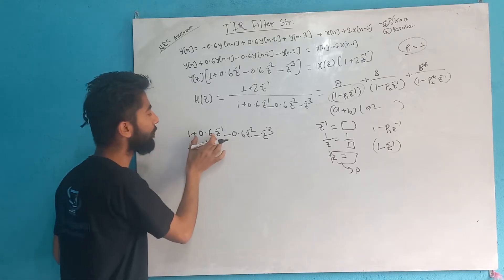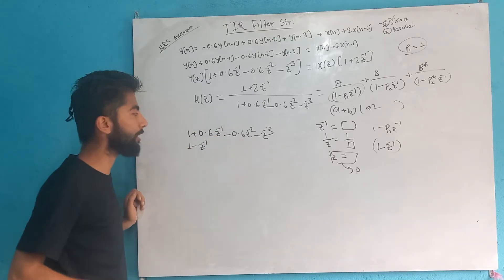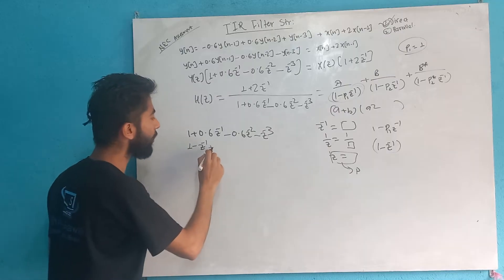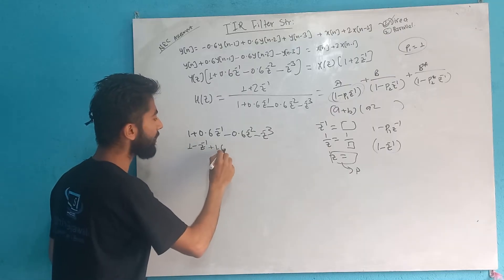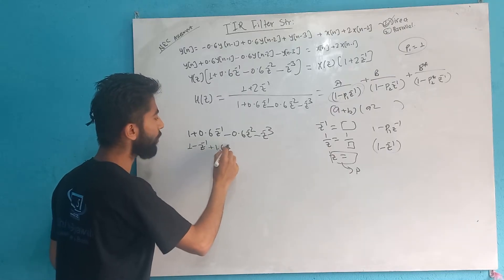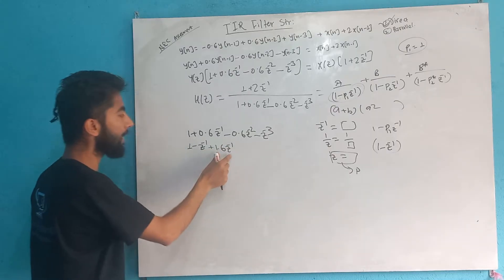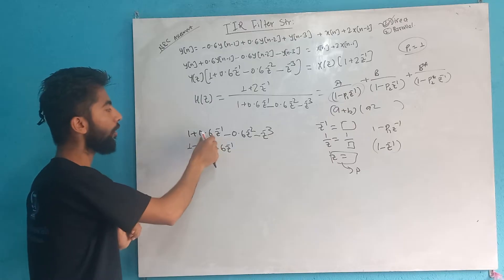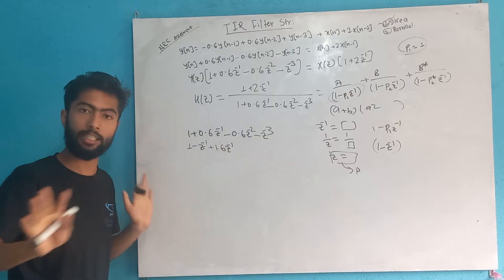Now if I say minus z-inverse, then it is plus 0.6 z-inverse. So plus 1.6 z-inverse. So 1 cancels out and we get 0.6 z-inverse.